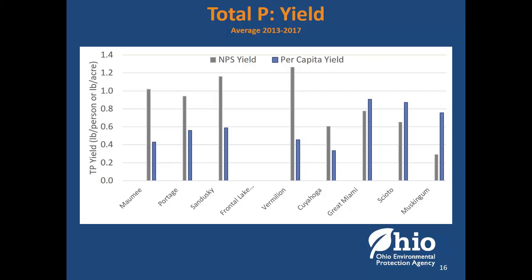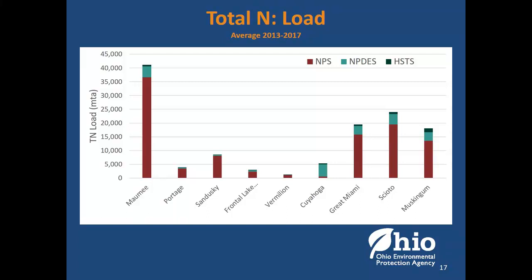Not only are there phosphorus limits at wastewater plants in the Lake Erie drainage, they're doing way better than required. Most of the majors have a limit of one milligram per liter, but taken as a whole group their average is closer to 0.4 — well above and beyond. For total nitrogen, the big takeaway is there's not as much difference between the non-point source and point source contributions between the Ohio River and western Lake Erie drainage as we saw with phosphorus.